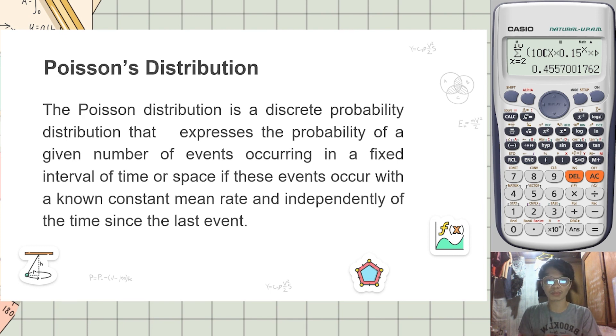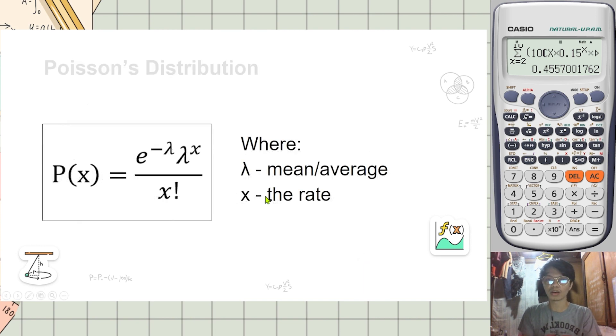that expresses the probability of a given number of events occurring in a fixed interval of time or space if these events occur with a known constant mean rate and independently of the time since the last event. This is the definition.